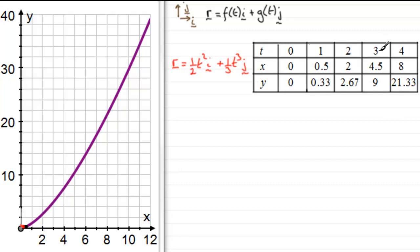For example, if t equals 3, then x turns out to be 4.5, because substituting 3 into the i component: 3 squared is 9 and half of 9 is 4.5. Substituting t equals 3 into the j component: one third of 3 cubed equals one third of 27, which is 9. So after three seconds, the position vector r of the particle is 4.5i + 9j. You may want to pause and check the other values.